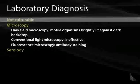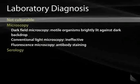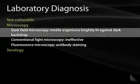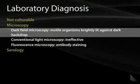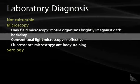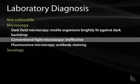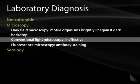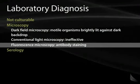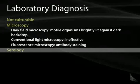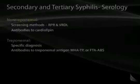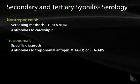For lab diagnosis, we're not able to culture Treponema pallidum, so we rely on dark field microscopy when we have a tissue sample — we'll see motile organisms brightly lit against a dark backdrop. Conventional microscopy is not very good, and we can also do fluorescent microscopy with a direct fluorescent antibody. More and more commonly, we rely on serology to diagnose syphilis.